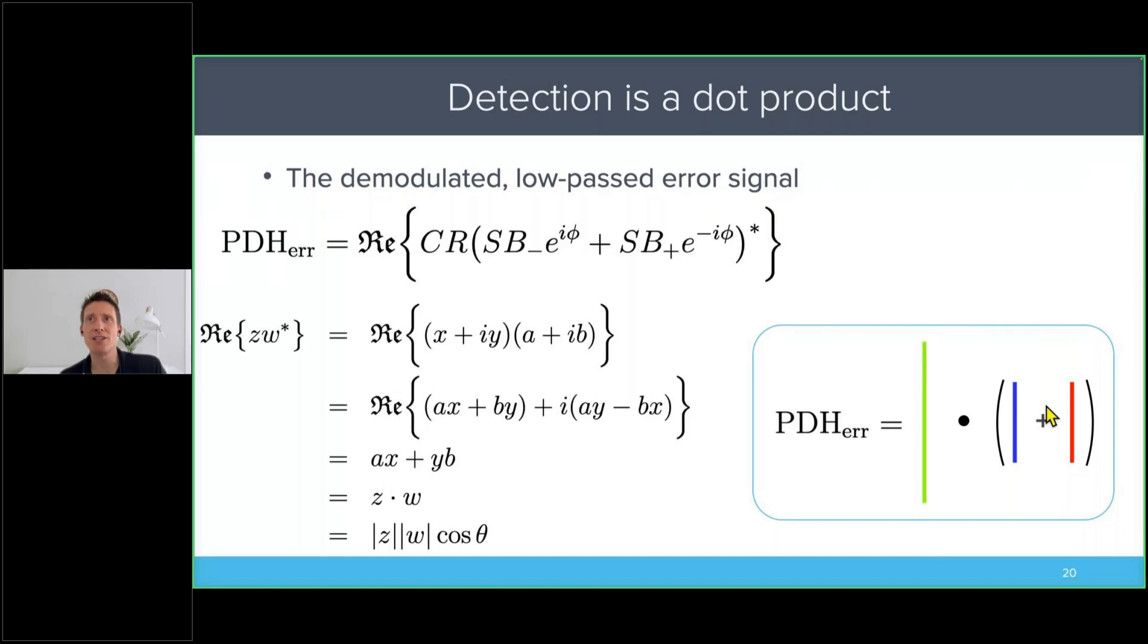So the PDH error signal is the carrier dot the sidebands. That's how we can compute it.